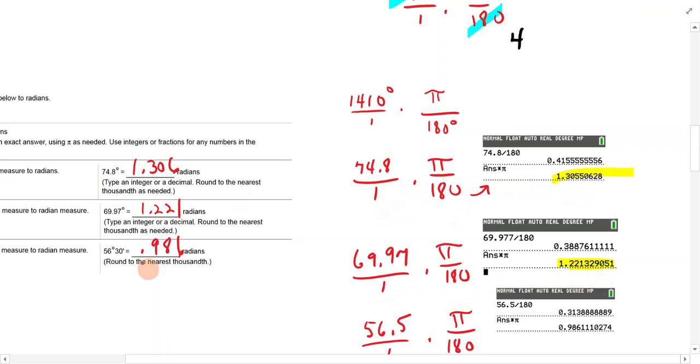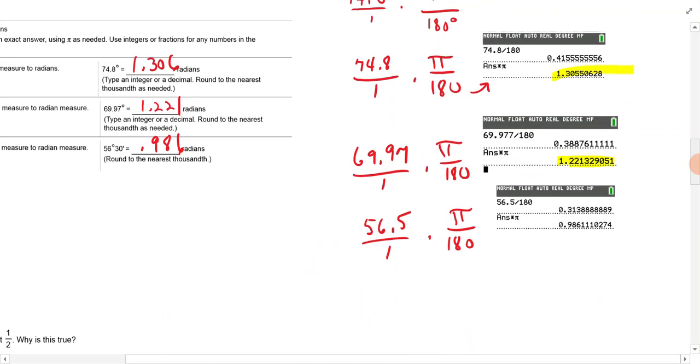For the 56 degrees, 30 minutes, what I did was I said, okay, I know 30 minutes is half of a degree, so I did 56.5 divided by 180 and then times pi. So that's how we'll do those.